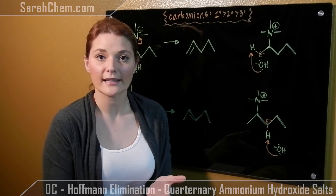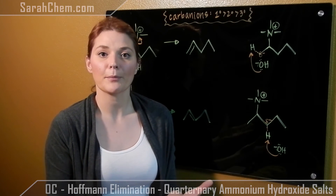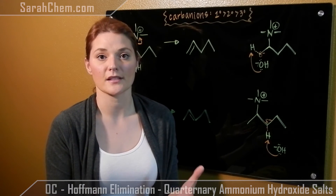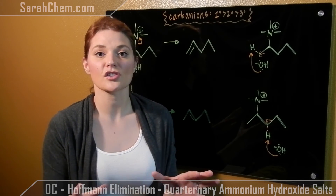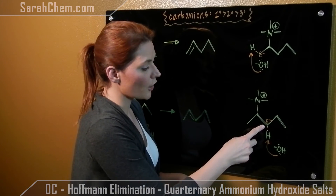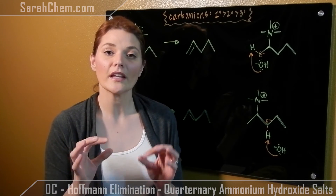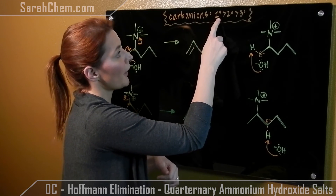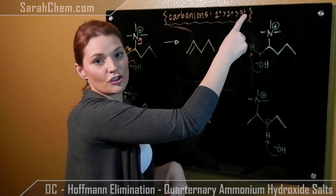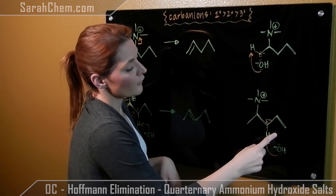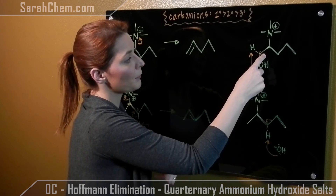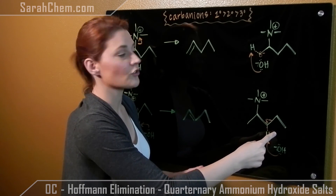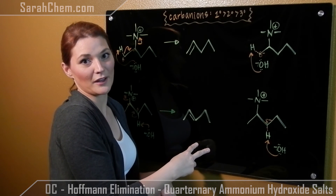For carbocations, tertiary is more stable than secondary, which is more stable than primary. The reason for that is hyperconjugation, where the neighboring methyl groups share electrons which stabilize the positive charge. Now hyperconjugation is not going to stop just because we have a negative charge developing — they're still being shared, but that's going to be a destabilizing force. So for carbanions, primary is more stable than secondary, which is more stable than tertiary. This means the primary carbanion is much more stable than the secondary, which is why this is the major product and this is the minor product.